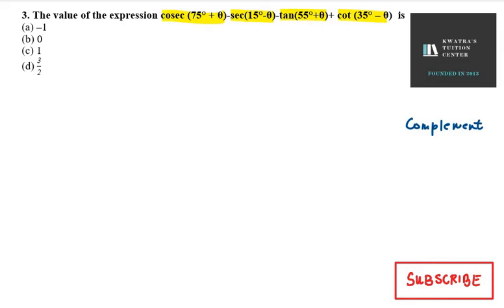Let's find out whether it is a complement or not. Theta cancels, you are left with 75 plus 15, which makes a sum of 90 degrees. Now, tan 55 plus theta and 35 minus theta, you will again get 90 degrees. So these are two complement angles - the first two and the last two are complement angles.